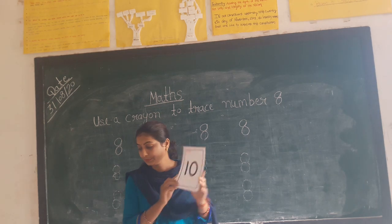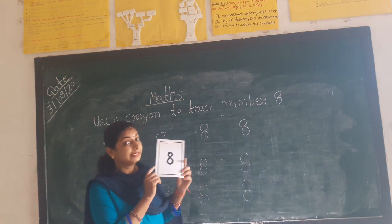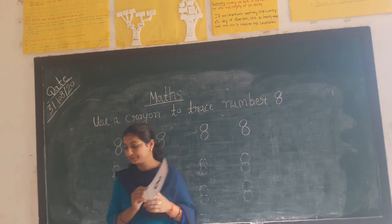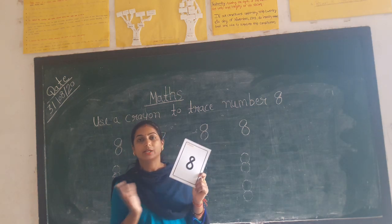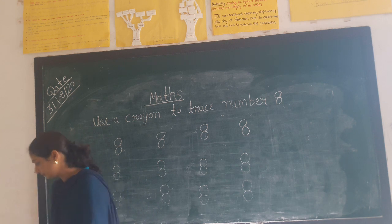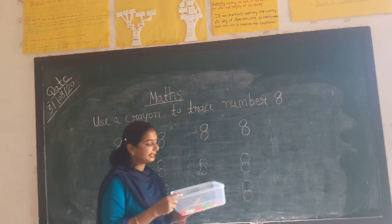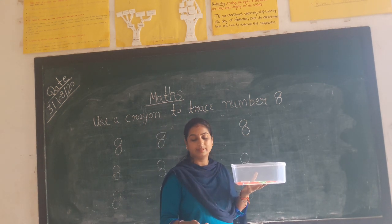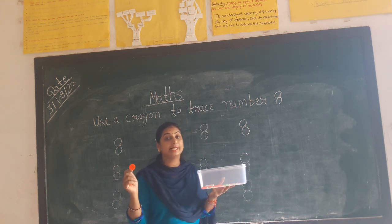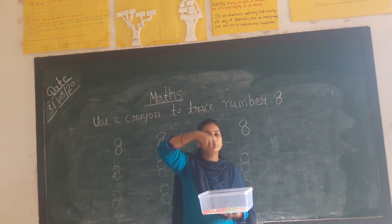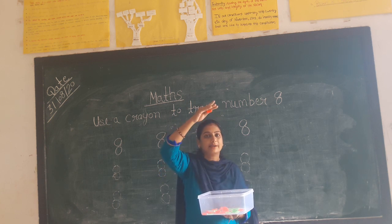This number — number 10. Okay. This number — number 8. Easy, no? We are counting number 8. We are counting. Do you think the number 8? I want to see. 1, 2, 3, 4, 5, 6, 7, 8.